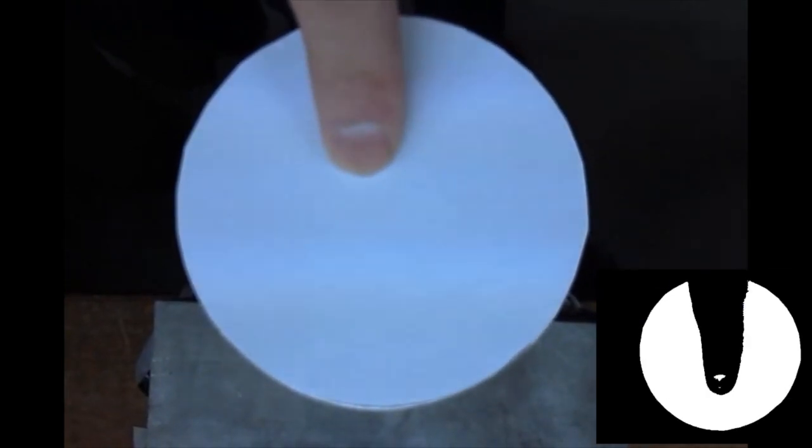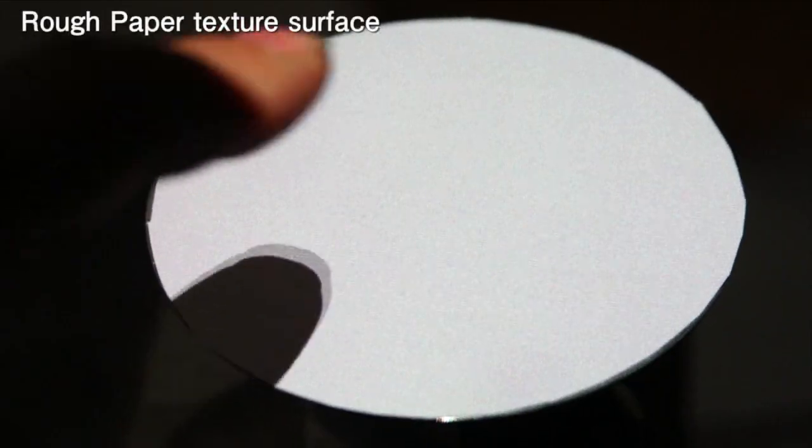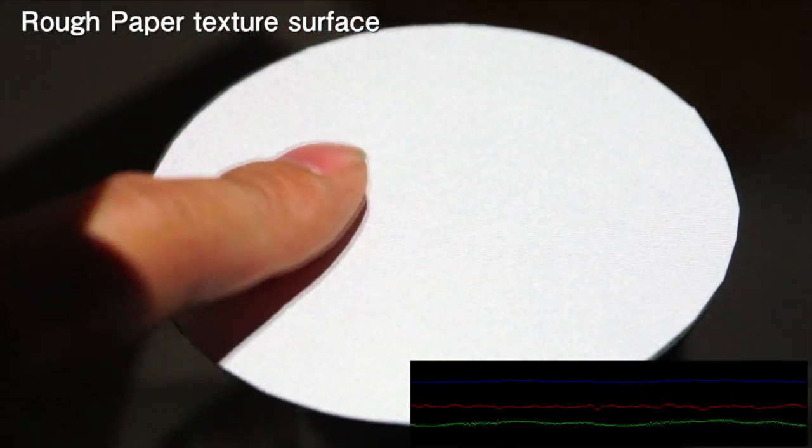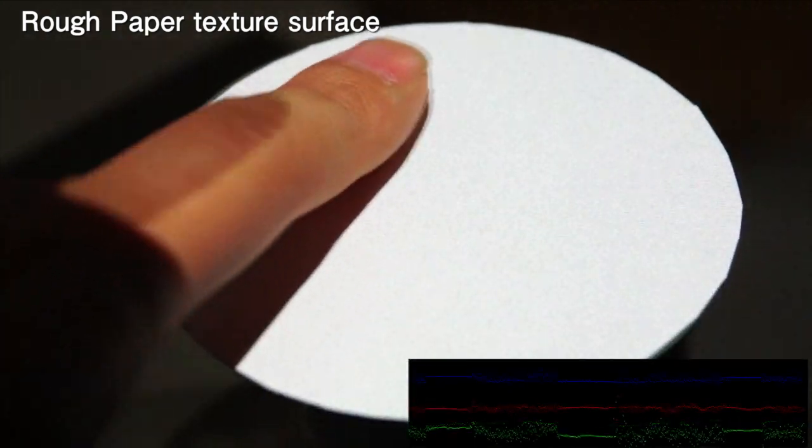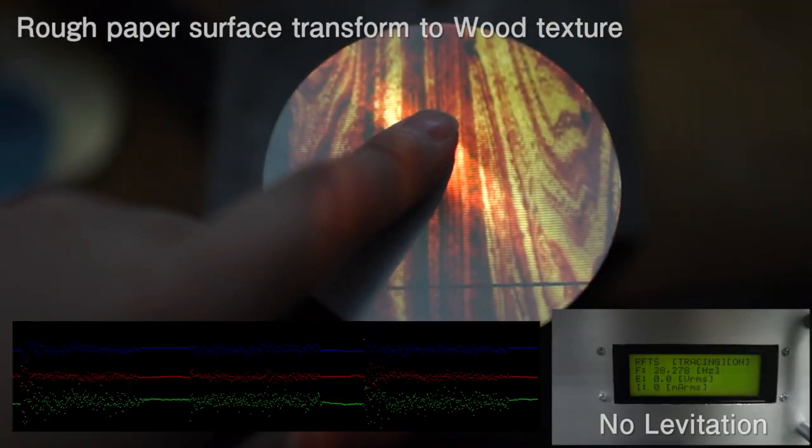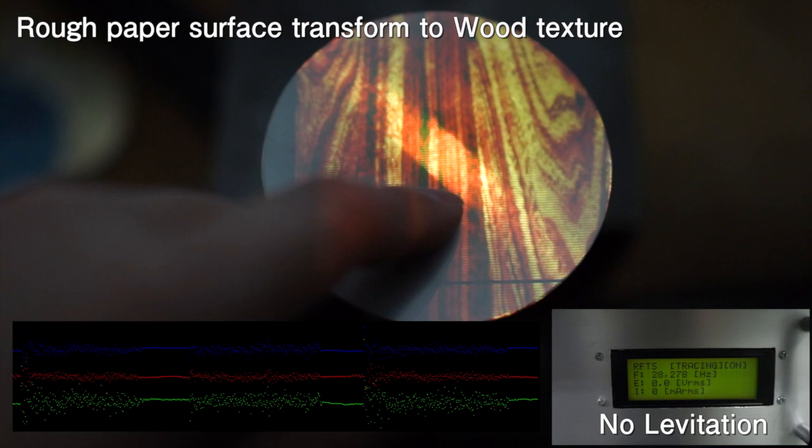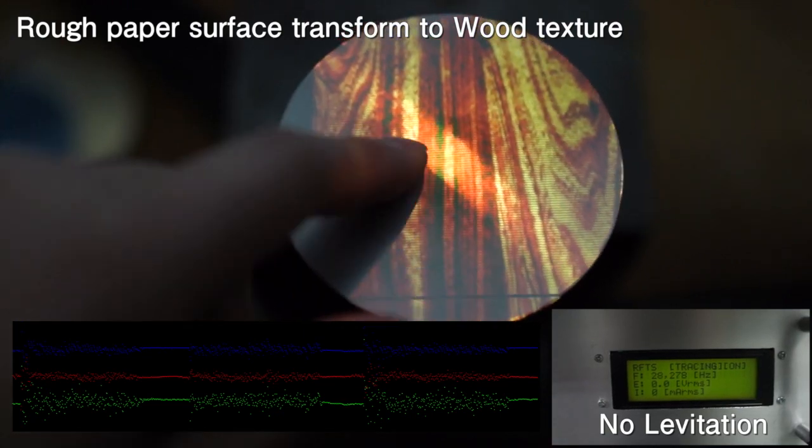With finger tracking and a change of levitation level corresponding to finger position, our system provides several textures at the same material. Moreover, with projection, our system provides both visual and haptic texture at the same time.